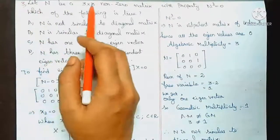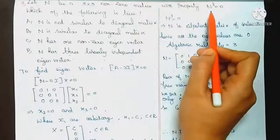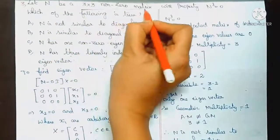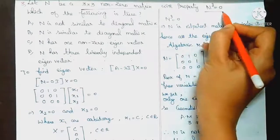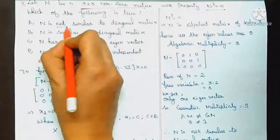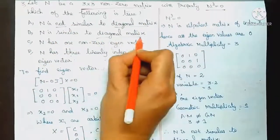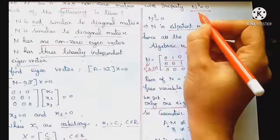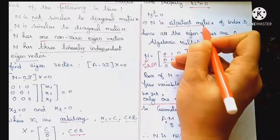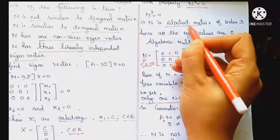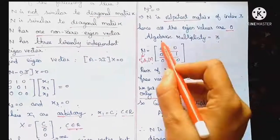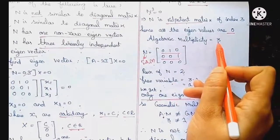Third question. Let N be a 3 cross 3 non-zero matrix with the property N³ = 0. Which of the following is true? We have a 3×3 non-zero nilpotent matrix. Options A, B, C, D. N is not a diagonal matrix. Since N³ = 0, the algebraic multiplicity of eigenvalue 0 is 3 — we have eigenvalue 0 three times.